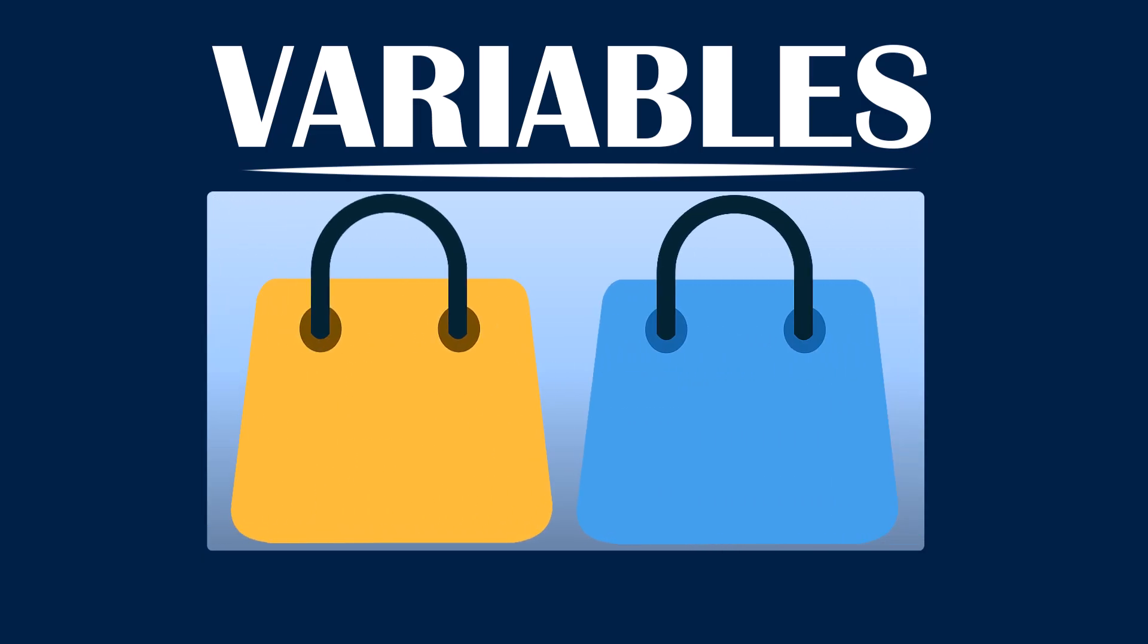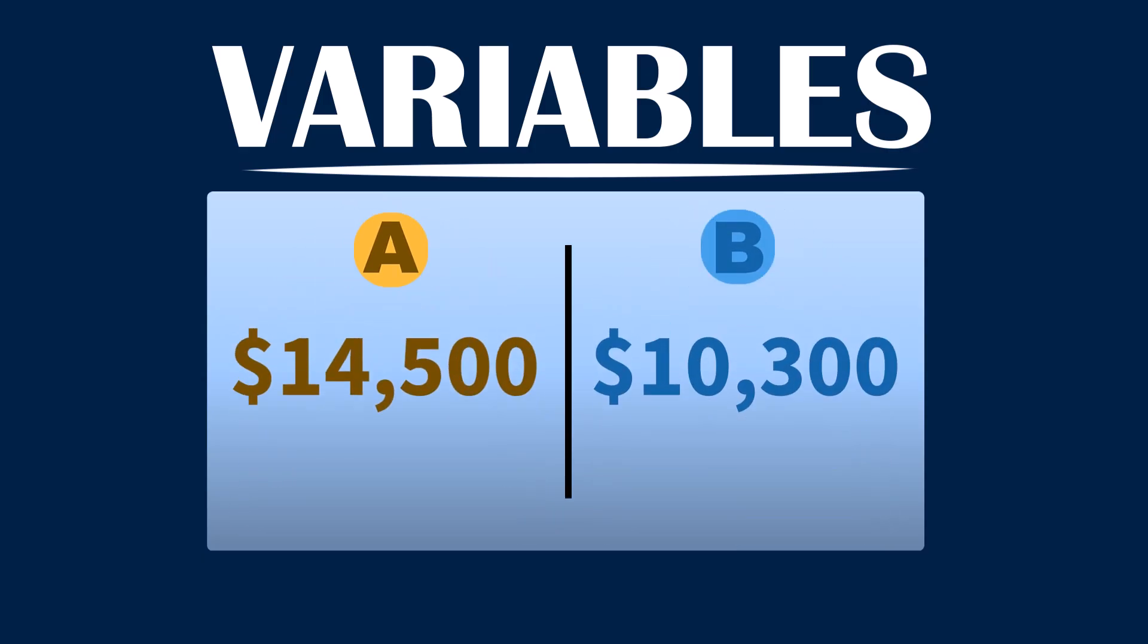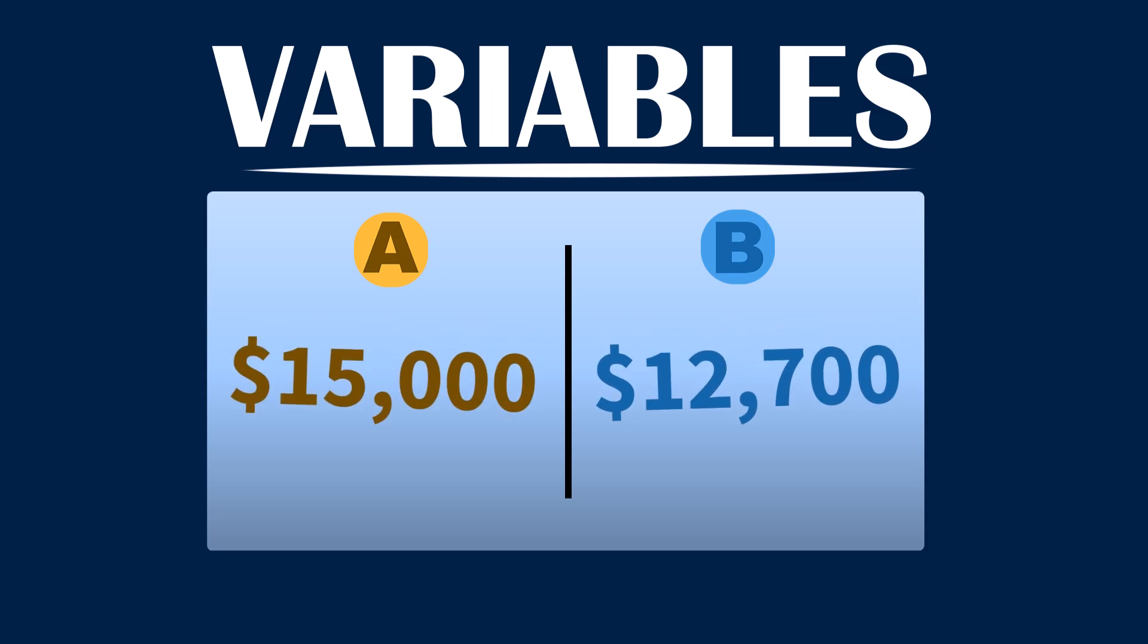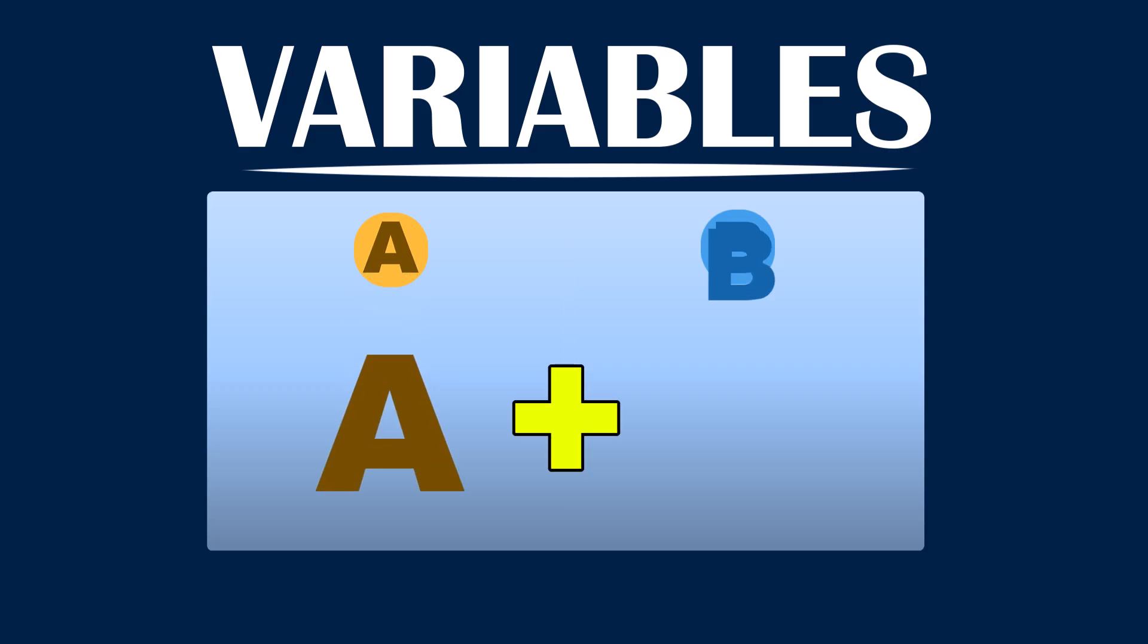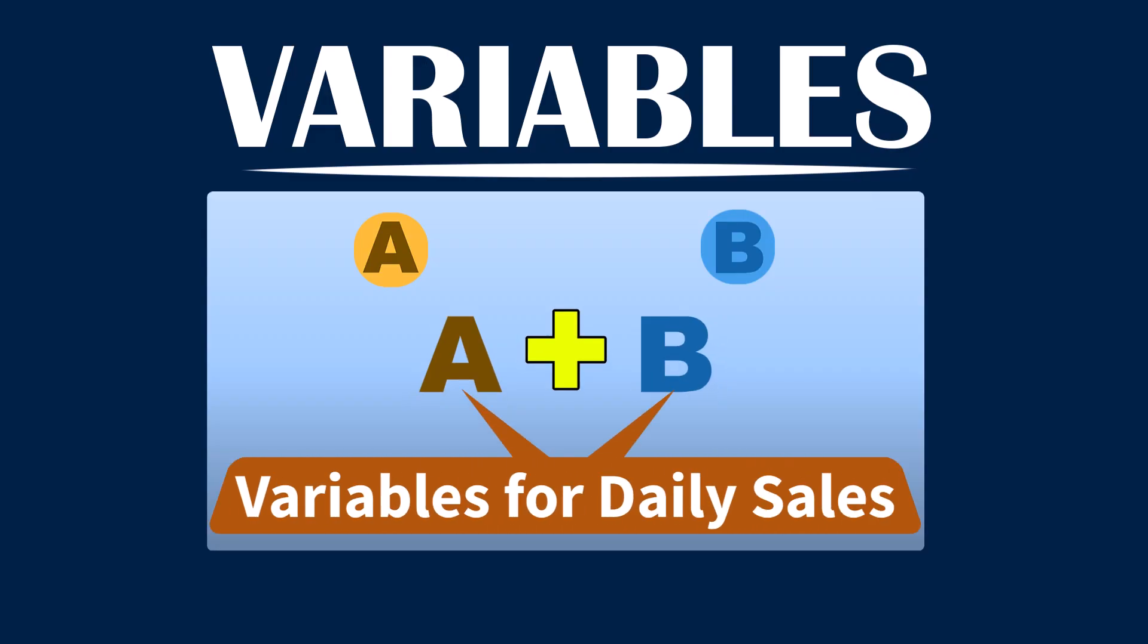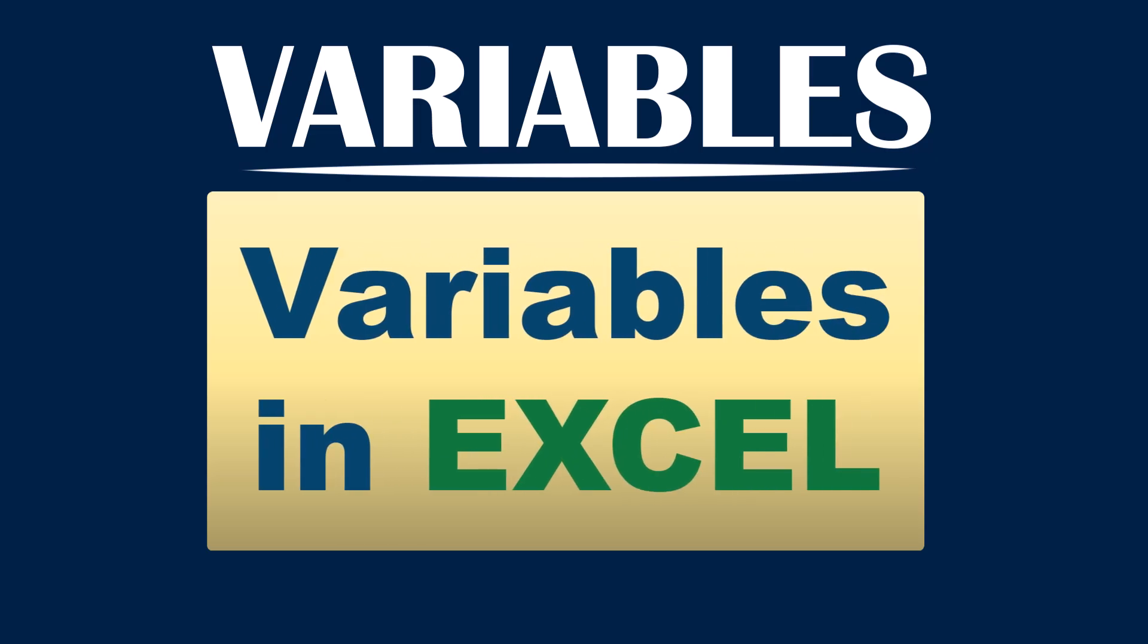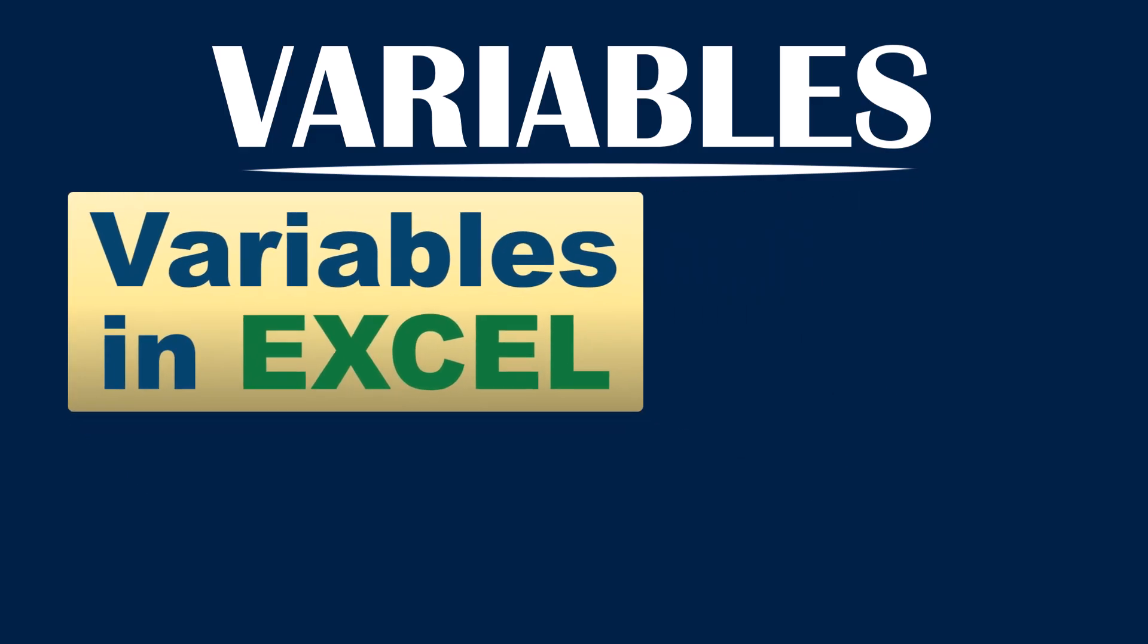Let's clarify that with a simple example. Let's say a business sells two products, product A and product B, and the revenue generated from each product varies every day. At any given day, the total revenue generated from both products can be given by A plus B, where A and B represent revenues generated from each product for any given day. In Excel, variables are used in a simple and consistent way. The variables we use in Excel are what we call cell references.